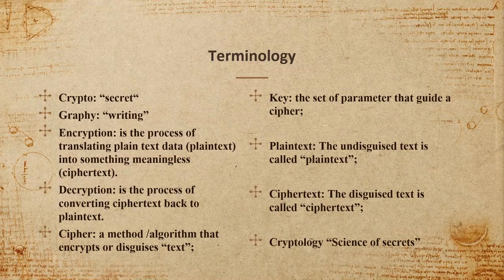A key is the set of parameters that guide a cipher. Plain text is the undisguised or standard text. Cipher text is the disguised text. And cryptology is the science of secrets.